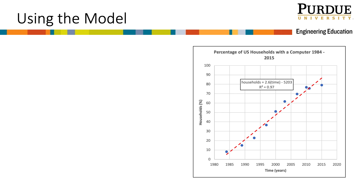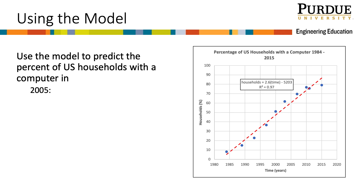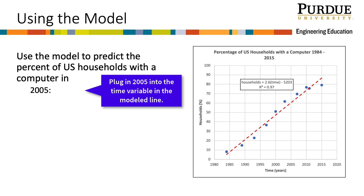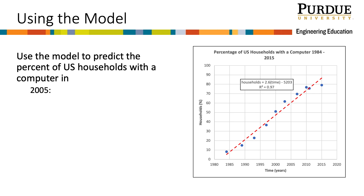Now that we have our plot in Excel formatted for technical presentation and our best fit line model from least squares regression, let's use the model. Let's predict the number of U.S. households with a computer in 2005. To do that, I can plug in 2005 for the year in my best fit equation. Then I get that households equals 2.6 times 2005 minus 5,203. The value obtained is 60.4%, which seems reasonable when we look at our data and think about the context of the problem.